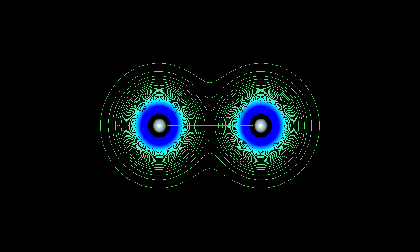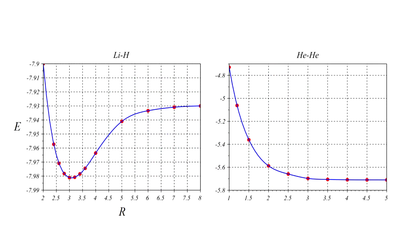Repeating the process for two helium atoms, we obtain an energy curve without a minimum. Therefore, Hartree-Fock theory predicts that a chemical bond between two helium atoms will not form, which is true under normal conditions.